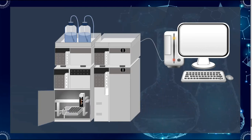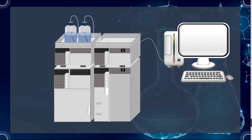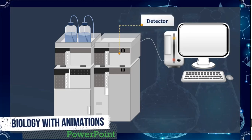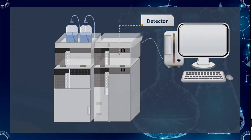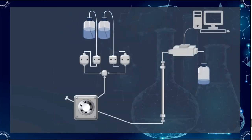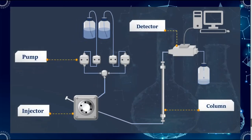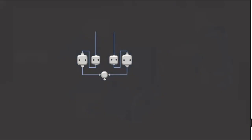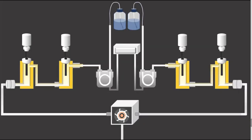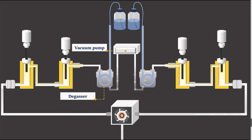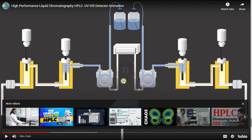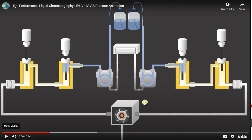In HPLC there is a mobile phase forced by a pump through the system, and a stationary phase called a column located in an oven where temperature can be controlled. The sample can be automatically injected by an HPLC auto sampler or manually introduced using a syringe. A vacuum pump and a degasser are connected to remove dissolved gases from the solvents.